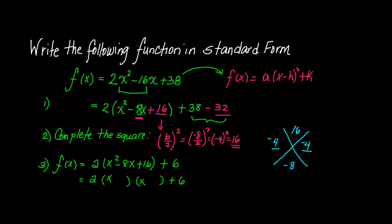Negative 4 times negative 4 is positive 16. Negative 4 plus negative 4 is negative 8. So these are your magic numbers. This is going to be minus 4, minus 4. And now I can go further, step 4. Since I'm multiplying x minus 4 times x minus 4, I can combine those two terms in exponent form. f(x) equals 2 times (x minus 4) squared plus 6. And there you have it.